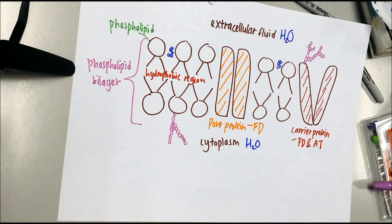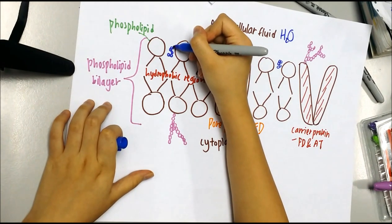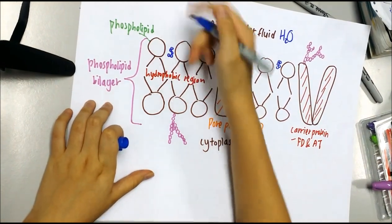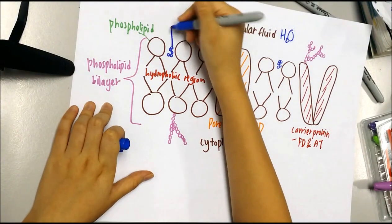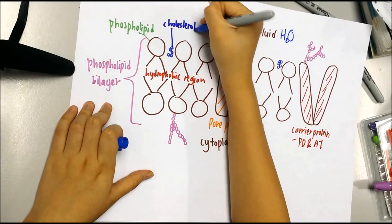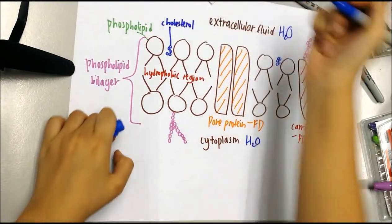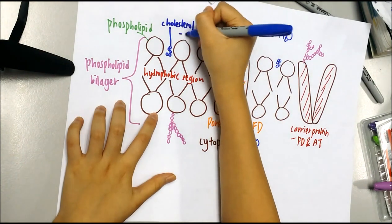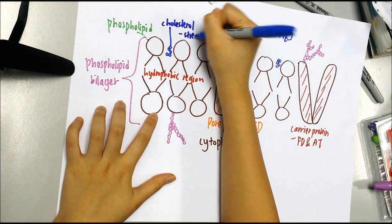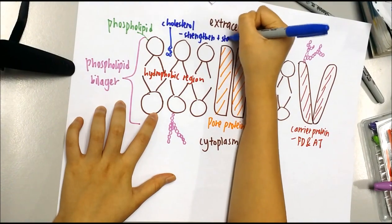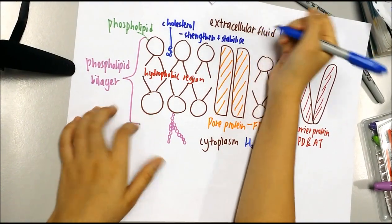The molecules that look like an S-shape between the hydrophilic heads are known as cholesterol. Cholesterol is important to strengthen and stabilize the plasma membrane.